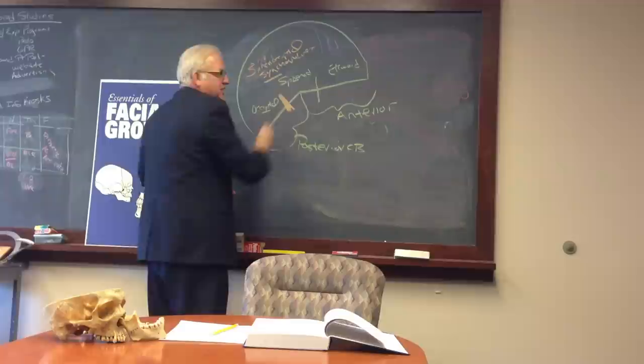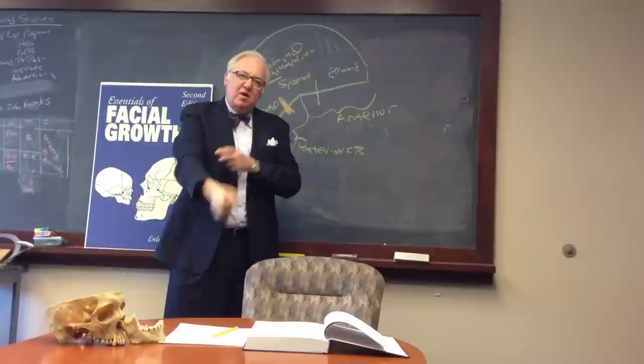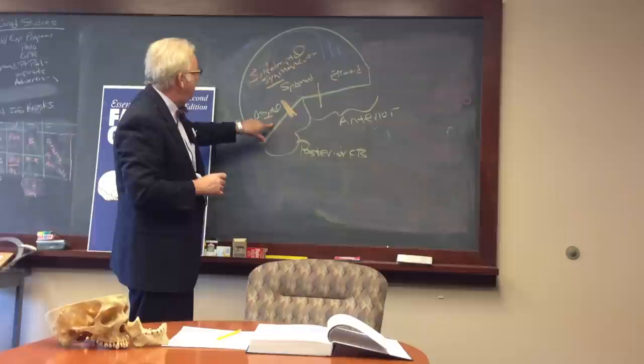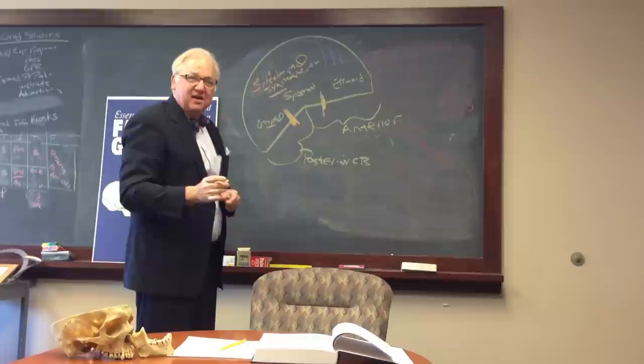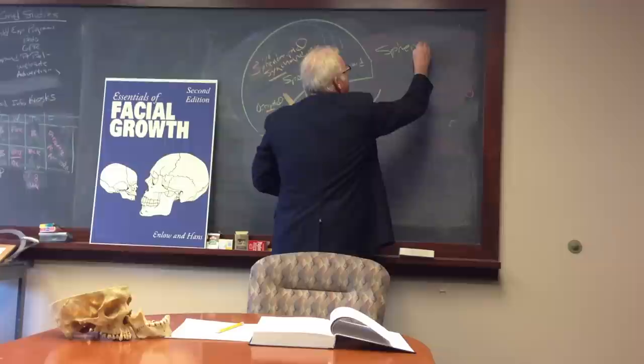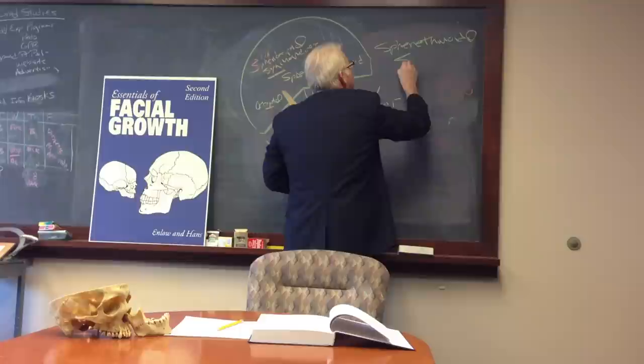Now, a synchondrosis is essentially the closest thing that we get to an epiphyseal growth plate in the skull. We've got these synchondroses, one between the sphenoid bone and the occipital bone. We have another one between the sphenoid bone and the ethmoid bone right here. What do you think we might call that? Sphenoethmoidal synchondrosis.